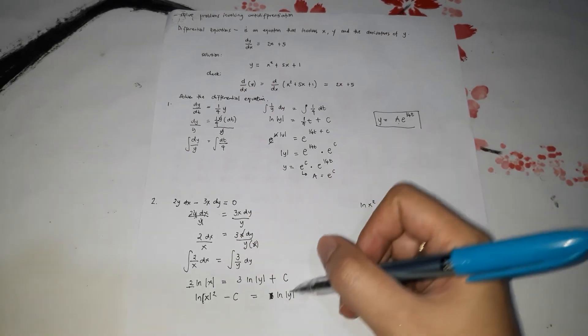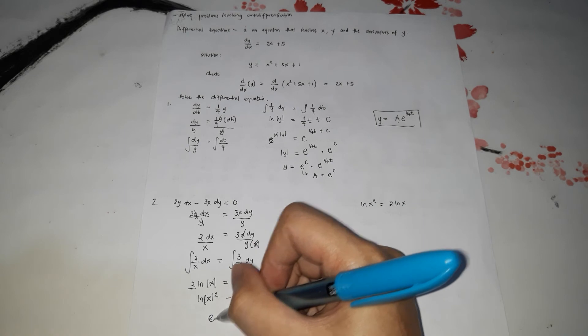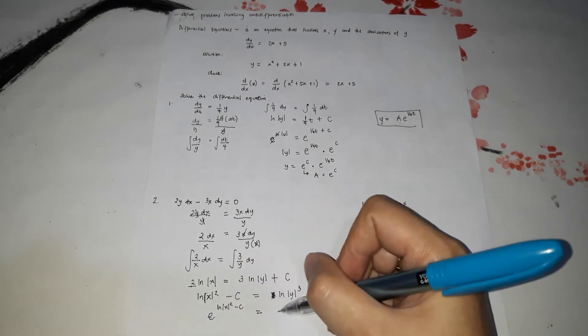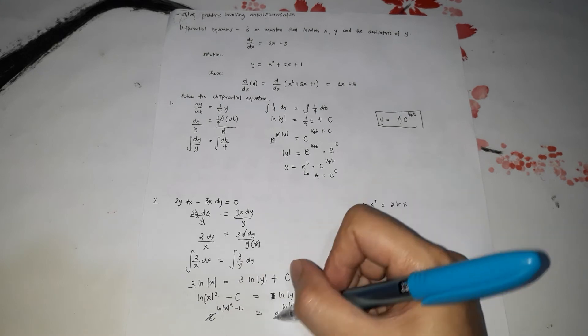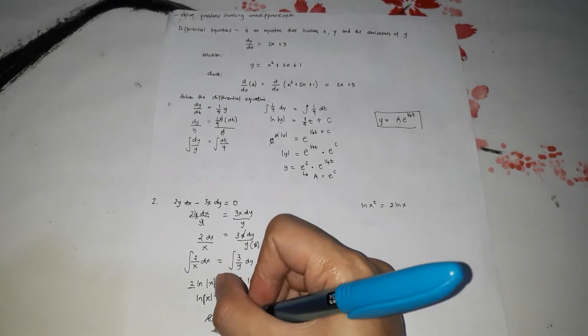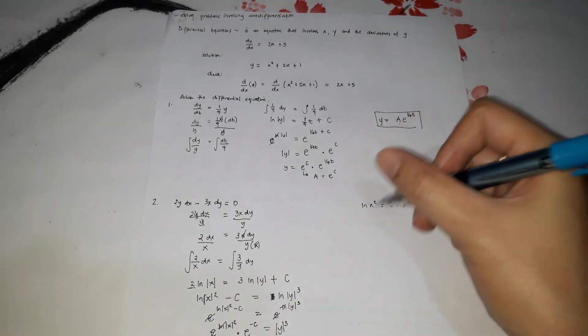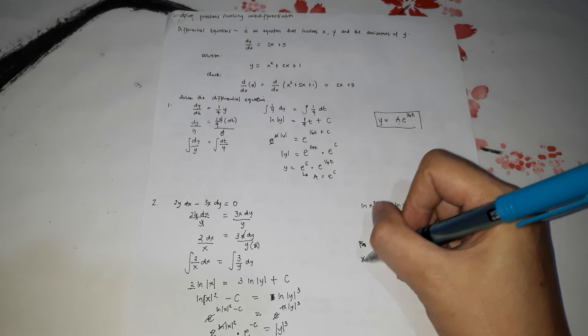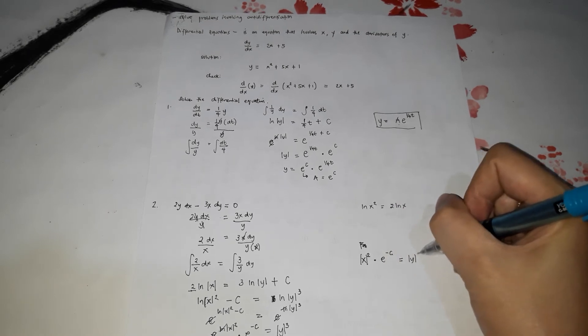So it becomes ln(x²) minus c equals ln|y³|. To cancel ln, we raise both sides as exponents of e. So e to the ln(x²) minus c equals e to the ln|y³|. The ln cancels on both sides, leaving y³ on the right. On the left, we distribute: x² times e to the negative c equals absolute value of y cubed.